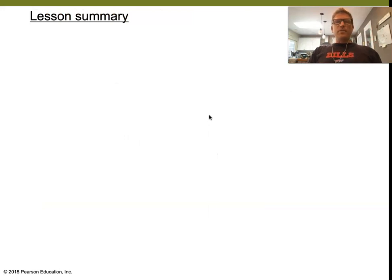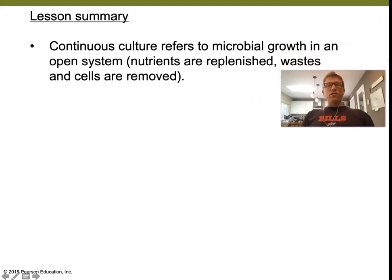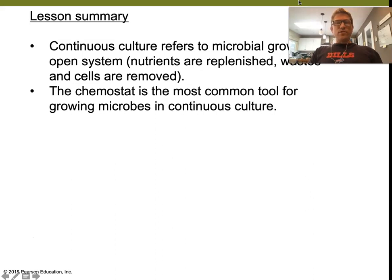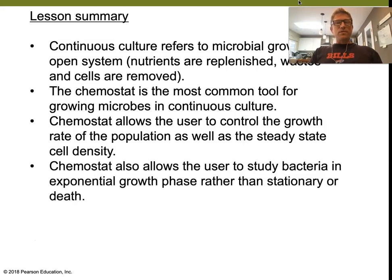To summarize the key points of the chemostat and the concept of an open, continuous culture system: it refers to microbial growth in an open system where nutrients are replenished and waste products and cells are removed. The chemostat is the most common tool for growing microbes in continuous culture. It allows the user to control both the growth rate of the population and the steady state cell density — having control over those two features gives you a lot of power in the laboratory. It also allows the user to study bacteria in exponential growth phase rather than capturing them in stationary phase or death phase, as often happens in a batch system.